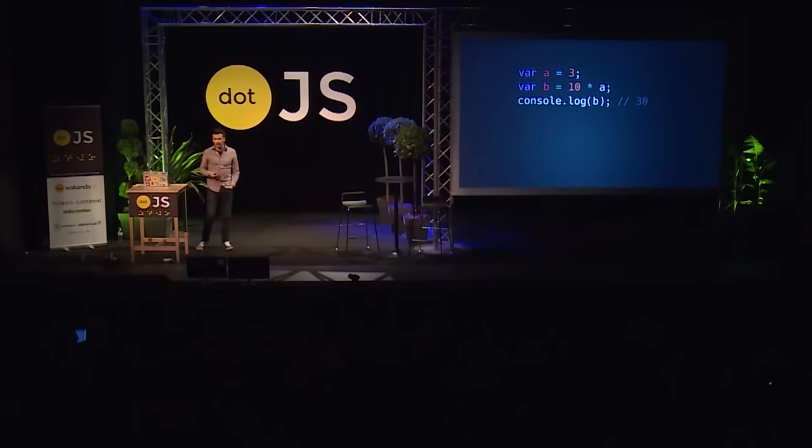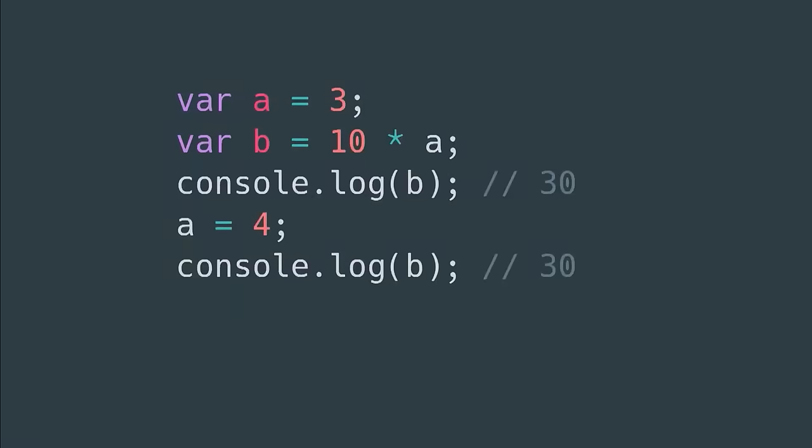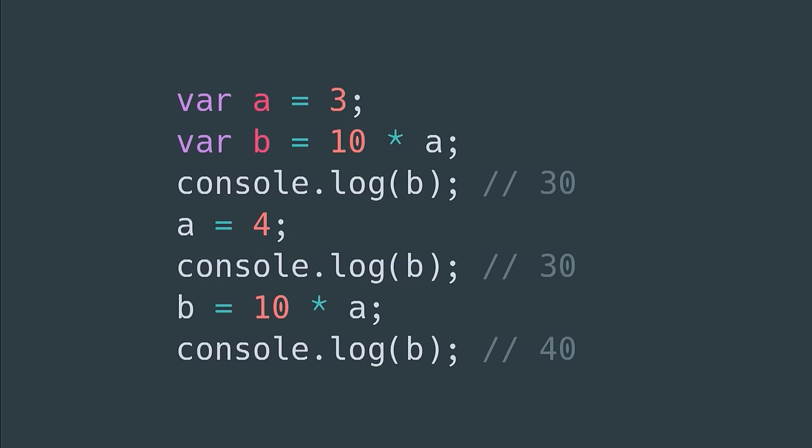Now, what happens if you just set A to 4 and you check the value of B? It's still 30 — it stays unchanged. So what you need to do is call again B assigned to 10 times A, and then you get B equals 40.